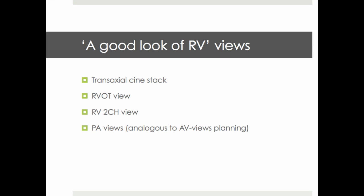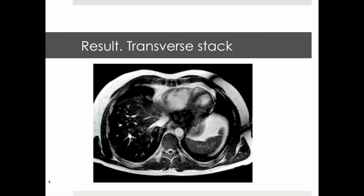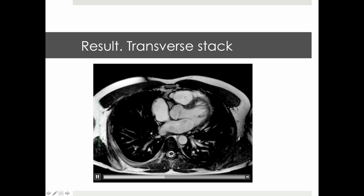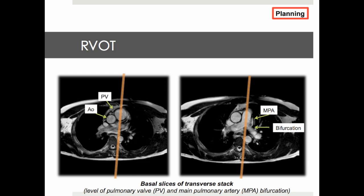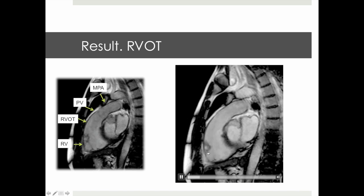In clinical routine, a good look at the right ventricle usually means a transaxial cine stack and RVOT view, bearing in mind that if any abnormalities are detected, additional views such as RV 2-chamber view and pulmonary artery views are always possible. When planning the transverse or axial cine stack, it is important to include structures such as the pulmonary artery as well as the very bottom of the heart. The resulting transverse stack allows appreciation of the right ventricle, its continuation into the RVOT, pulmonary valve, and pulmonary artery and its bifurcation. Planning the RVOT involves cutting through the pulmonary valve and main pulmonary artery, yielding the RVOT view allowing appreciation of the pulmonary valve, main pulmonary artery, RVOT, and outlet of the right ventricle.